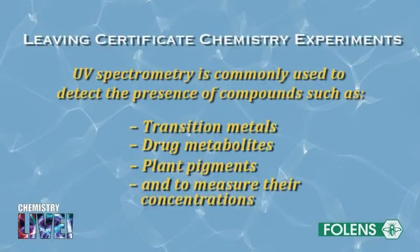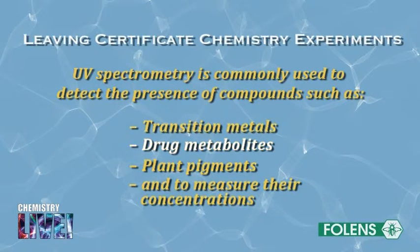In practice, UV spectrometry is commonly used in conjunction with HPLC to detect the presence of compounds such as transition metals, drug metabolites, and plant pigments, and also to measure their concentrations.